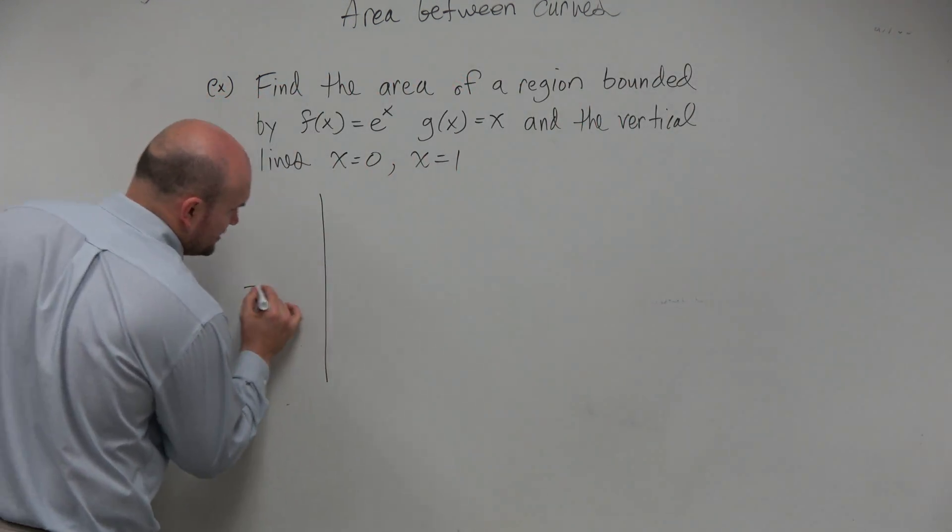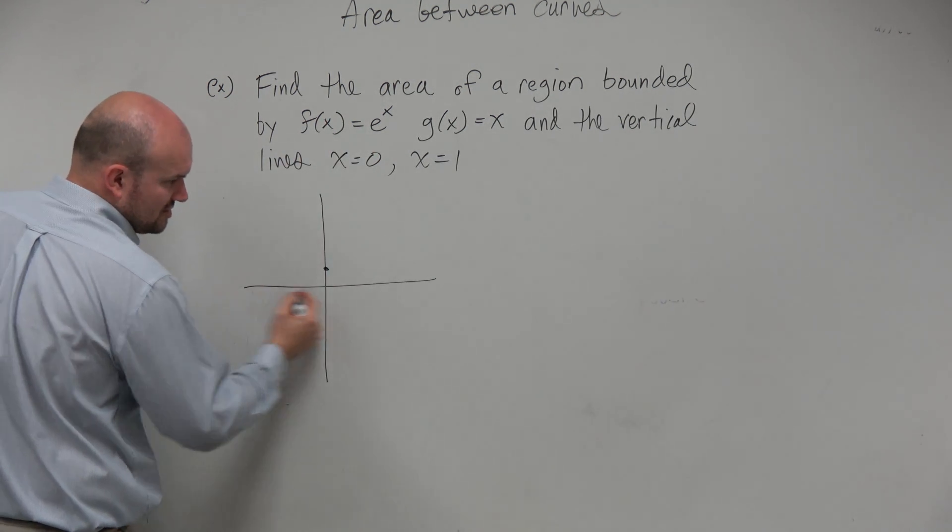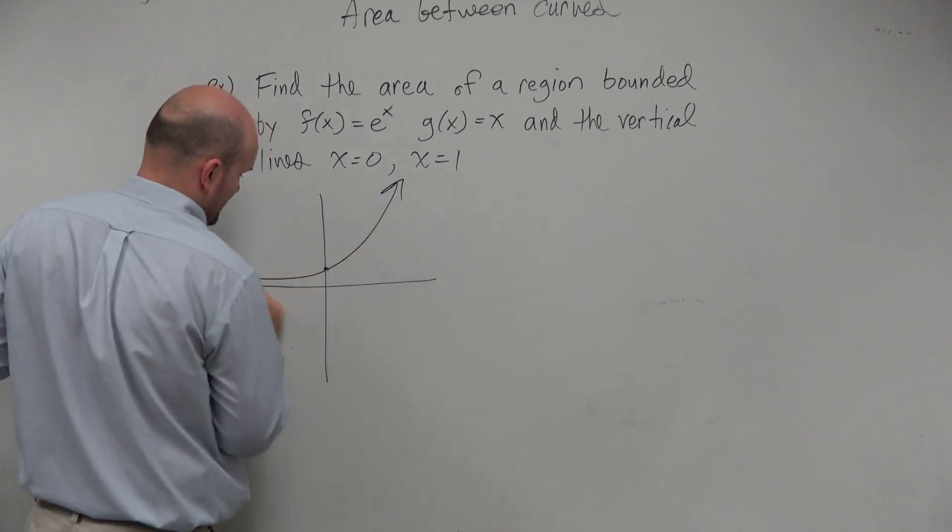So we're going to go and sketch. We should know e to the x has a y-intercept at (0,1), horizontal asymptote at 0. Graph looks something like that.